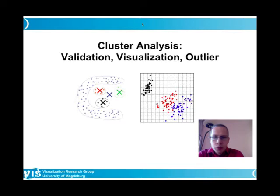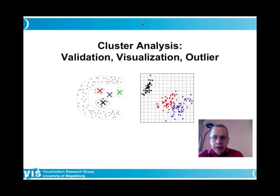Dear students, we discussed in the last week's subspace clustering as one technique to find groups that belong together in high-dimensional spaces. Before that, we looked at global clustering, and today I want to continue this family of cluster-related techniques with a discussion of validation of clustering results, visualization, and also the role of outliers — those elements that do not belong to a cluster, but may also be searched for without any clustering.